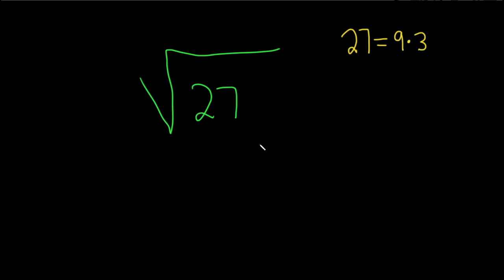All right, now we'll come back here, and we're just going to replace the 27 under our square root with 9 times 3. So this is the square root of 9 times 3, just like that. And now because we have two numbers and they're both positive like this, we can break it up into two square roots.